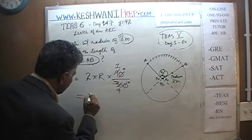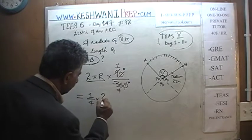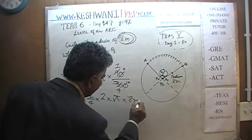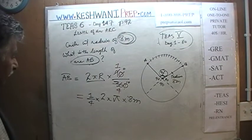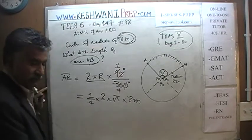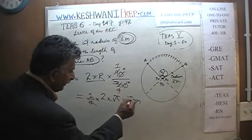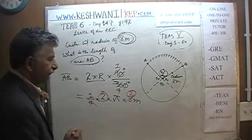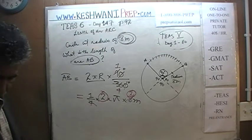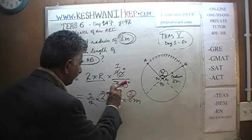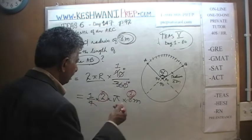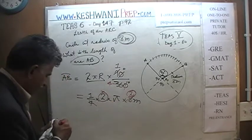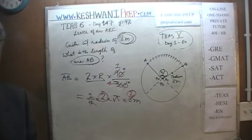One quarter of the circumference is 2 times pi times r, where r is 8 meters. We see a 4 at the bottom and 8 at the top, so divide top and bottom by 4: the 4 goes away and the 8 becomes 2. We are left with 2 times 2, which is 4. So the final answer is: the length of the arc is 4 pi meters.